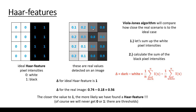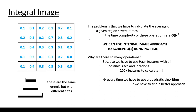In the previous lecture, we have seen a concrete example of how to calculate the delta value for a given Haar feature. The closer the value to 1, the more likely we have found a Haar feature. But we have to sum up lots of values because a Haar feature usually contains thousands of pixels, not just 8 pixels. That's why we have to talk about integral images.